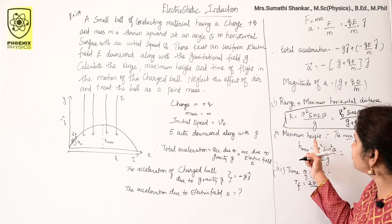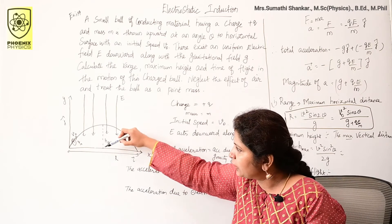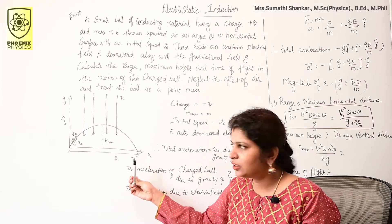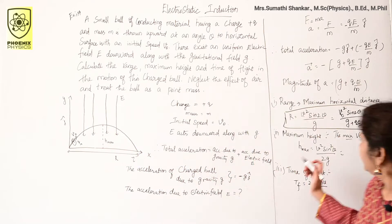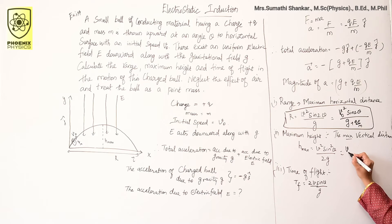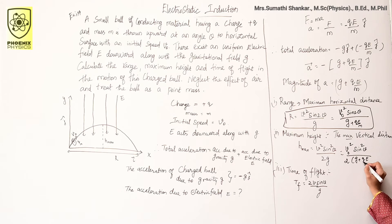Next, maximum height. Maximum height H_max is the maximum vertical distance reached by the projectile. The formula is H_max = v² sin²θ / (2g). With initial speed v₀ and replacing g with (g + qE/m), we get: H_max = v₀² sin²θ / [2(g + qE/m)].